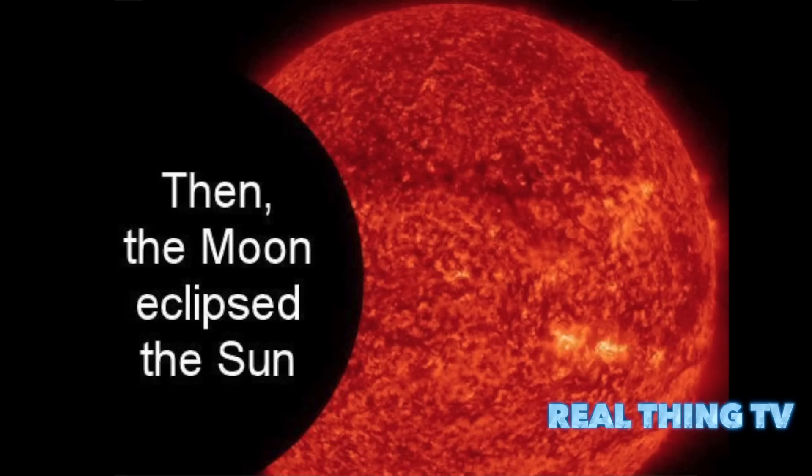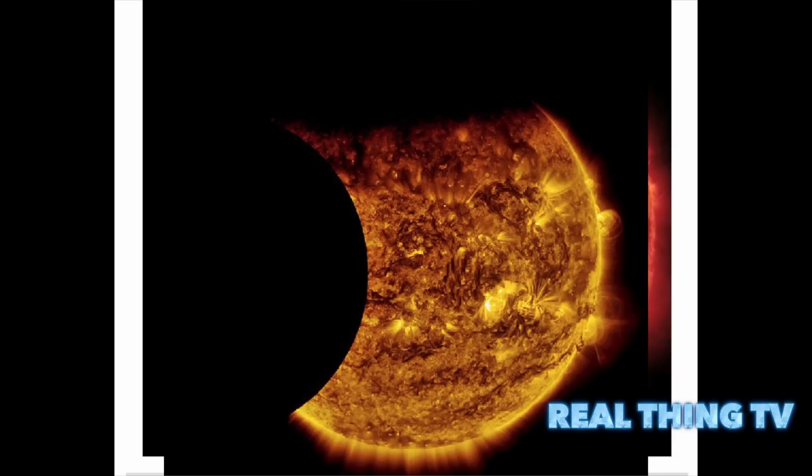When the Earth finally moved aside about an hour later, another eclipse was in progress. This time, the Moon was in the way.